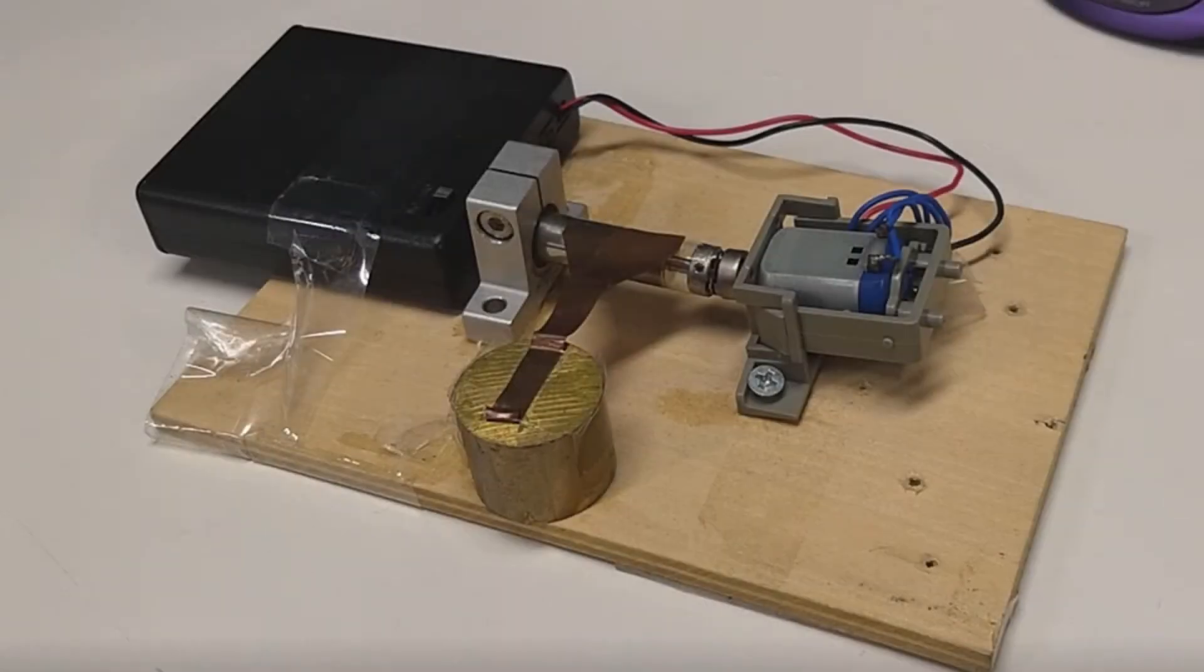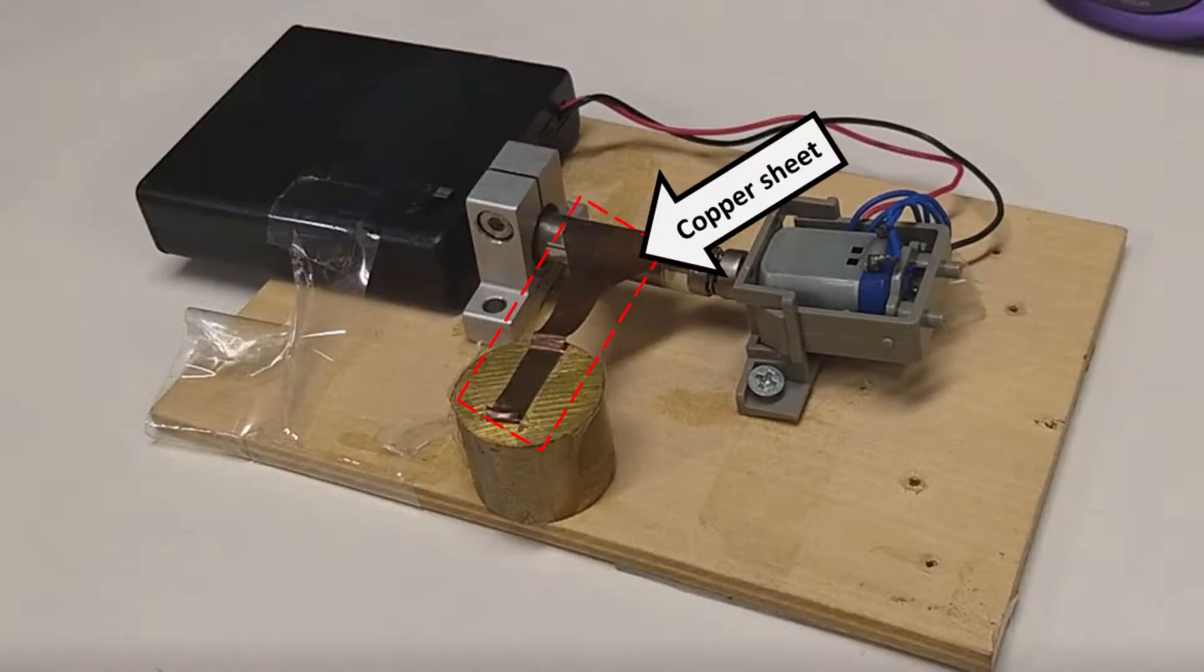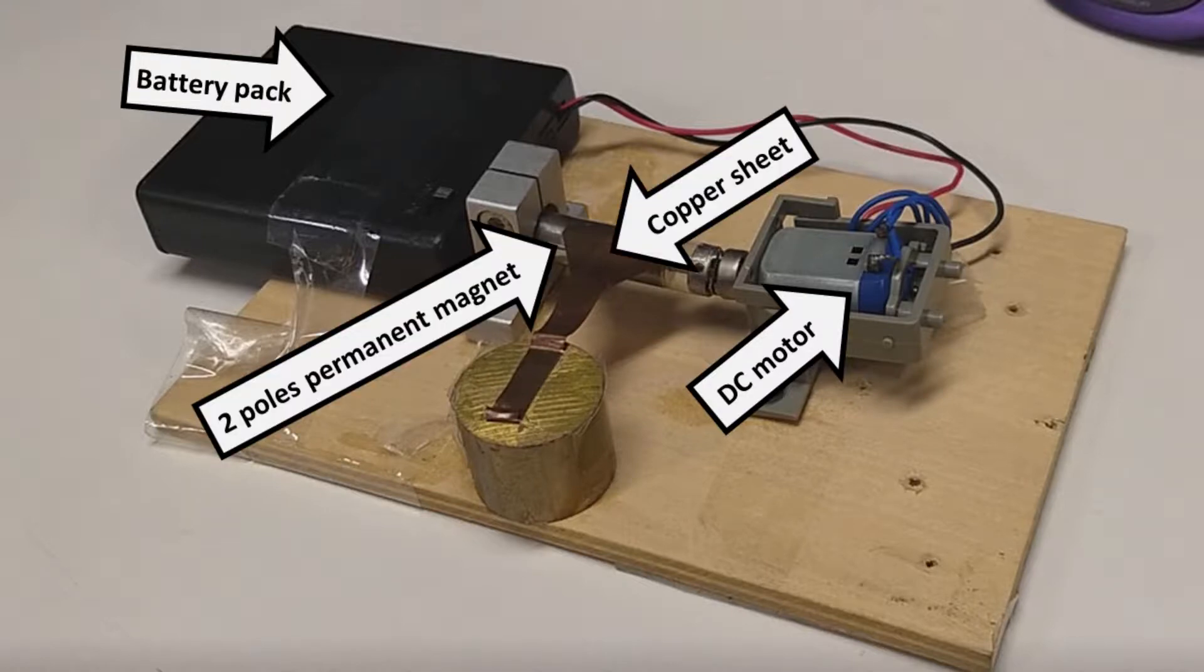This is our experimental setup. It is composed of a two-pole permanent magnet radially magnetized, along with a thin copper sheet, a DC motor, and a battery pack. So let's start it and see how it operates.